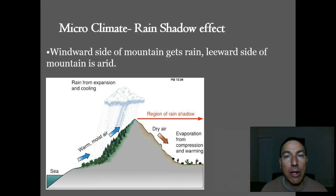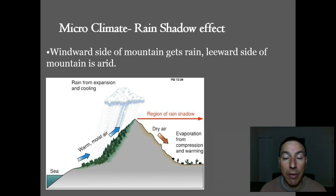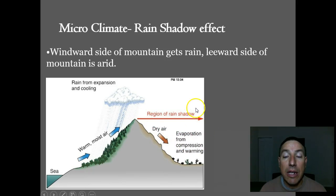The last weather phenomenon is the rain shadow effect, a type of microclimate. On the windward side of a mountain range, warm moist air gets pushed up, condenses, and produces precipitation — the windward side is highly wet. Examples include the Pacific side of California's Sierra Nevada mountains. However, once the air mass crosses over the mountains it has been wrung out of moisture. On the leeward side the air is dry — this is why we have the desert southwest in Nevada and Arizona.